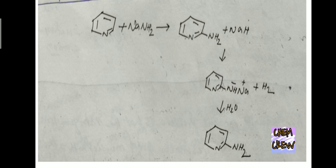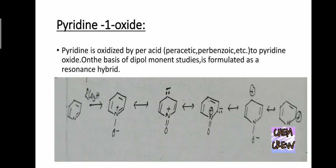Pyridine 1-oxide: Pyridine is oxidized by peracids such as peracetic acid or perbenzoic acid to pyridine oxide. On the basis of dipole moment studies, it is formulated as a resonance hybrid. This is the resonance hybrid you can see on the screen.